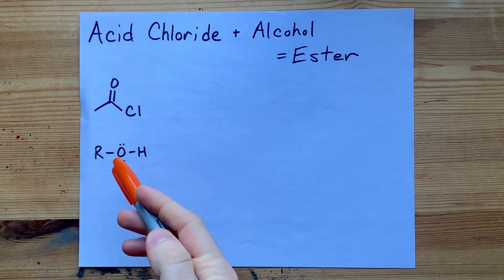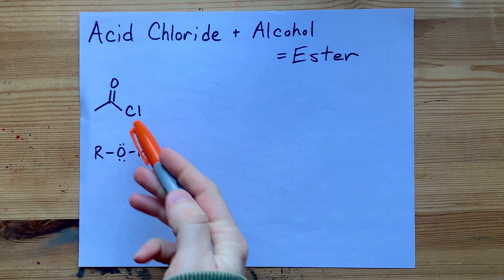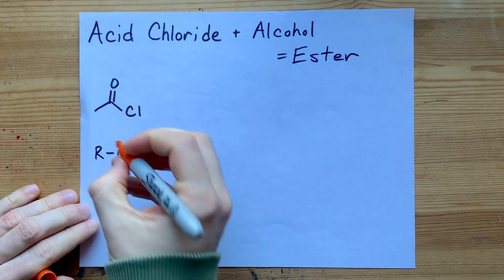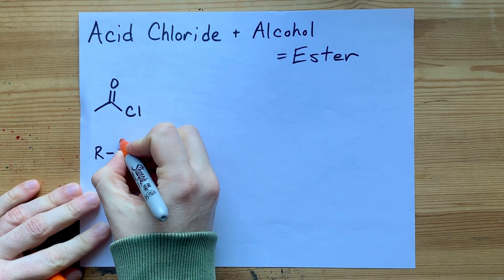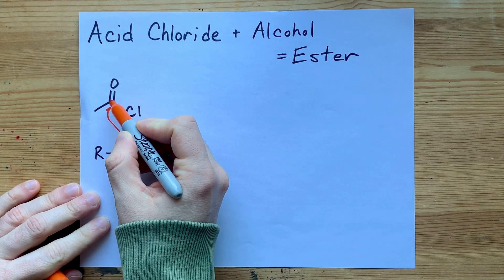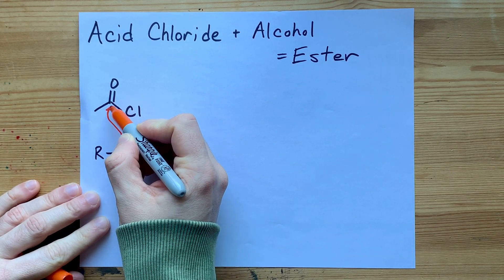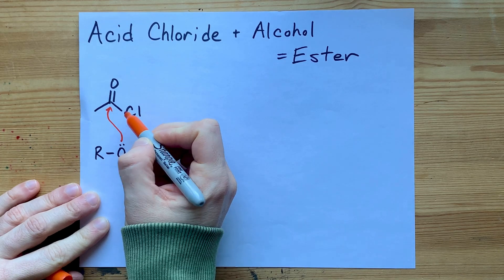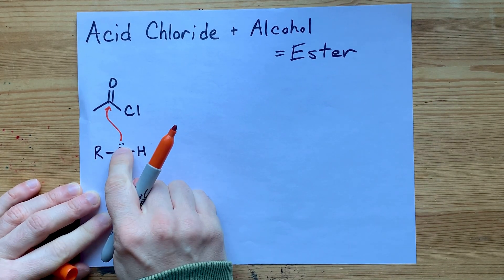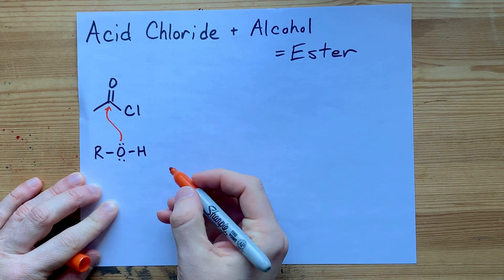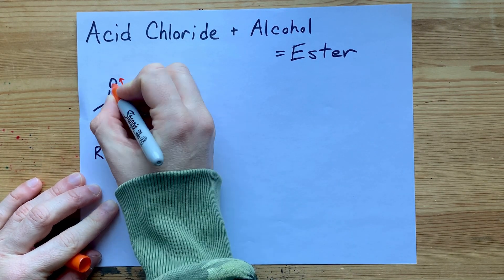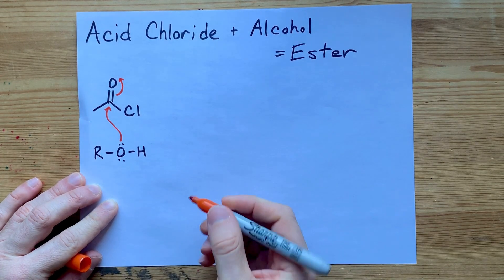An alcohol molecule will react with an acid chloride similar to how water would. The lone pair on the oxygen is attracted to the small positive charge on this carbon. That carbon has a small positive charge because it's connected to two electronegative atoms. So that lone pair attacks that carbon, which breaks the double bond and forces the oxygen to be just single bonded to carbon.